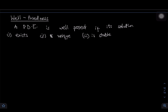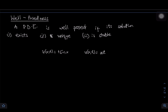The solution also has to be unique. For example, you cannot have u(x, t) equal to sin(x)·sin(t) and at the same time, for the same PDE, have a different solution. It has to be unique — u(x, t) must be the same for all time and within the domain.